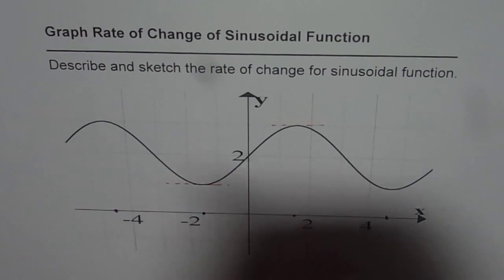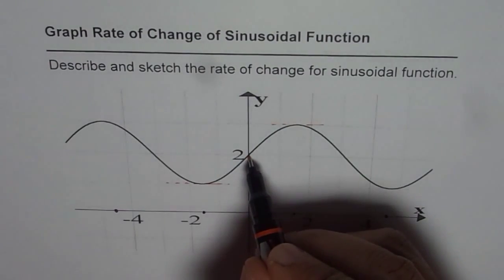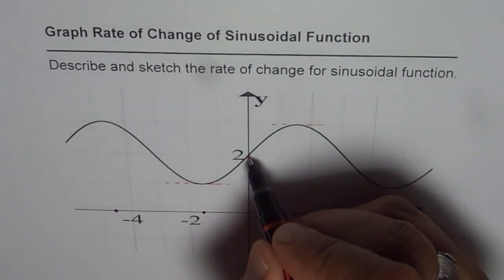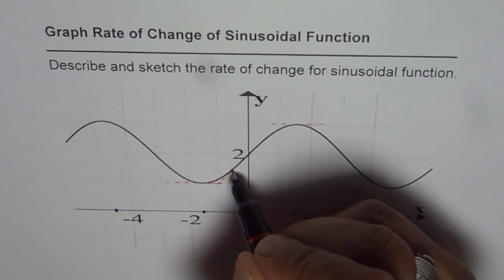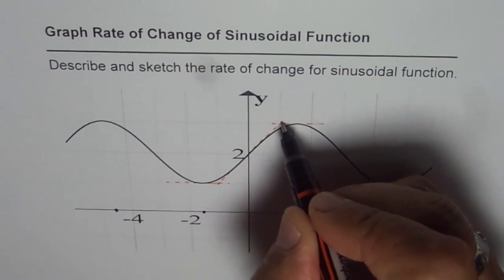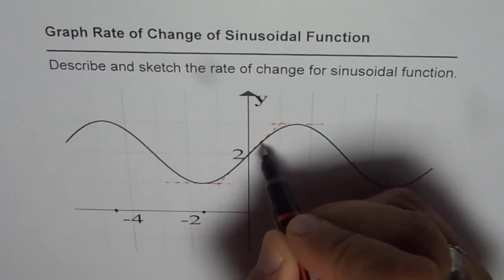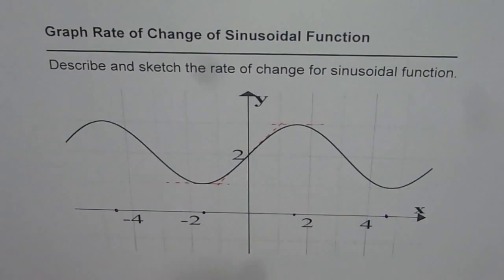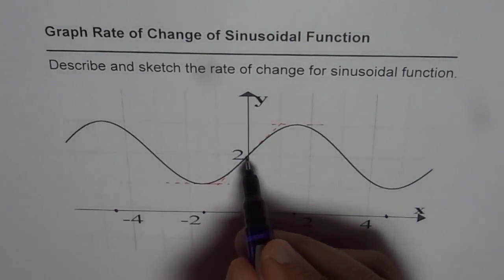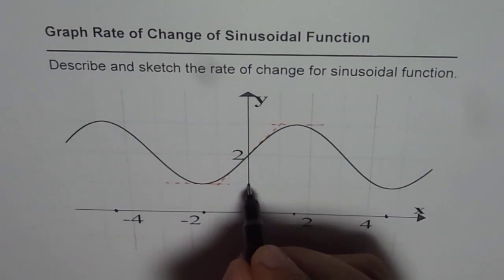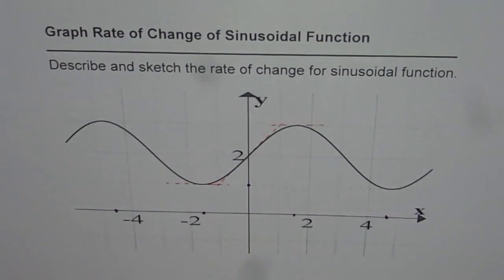Now, let's consider the point in the center. If I draw a tangent here, the slope of this line is plus one. That gives me another point on the rate of change. When x equals zero, the slope is one.